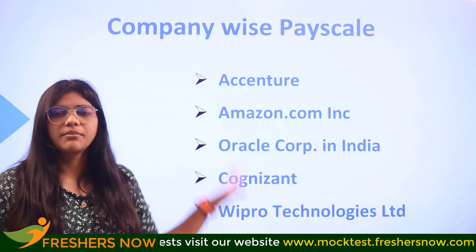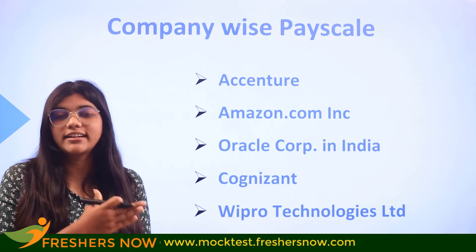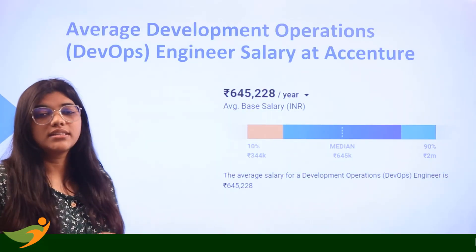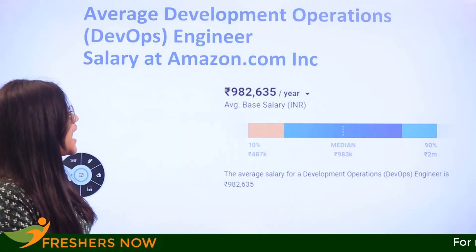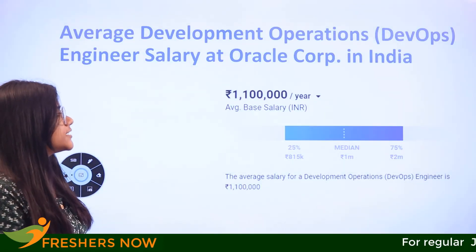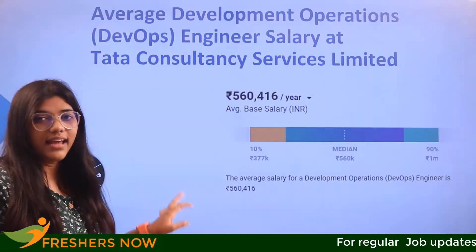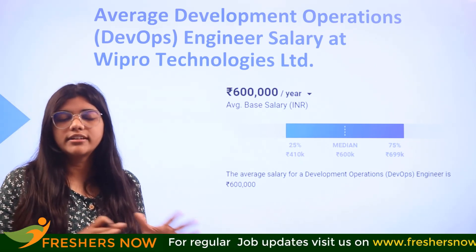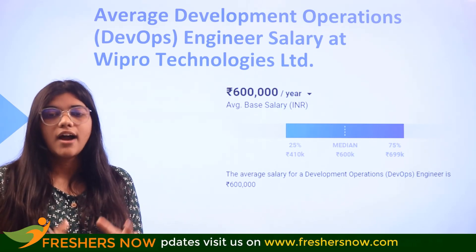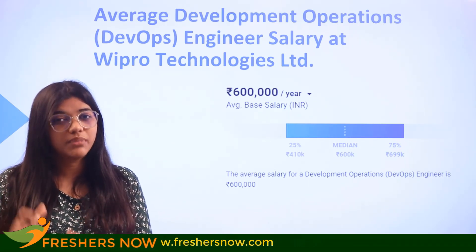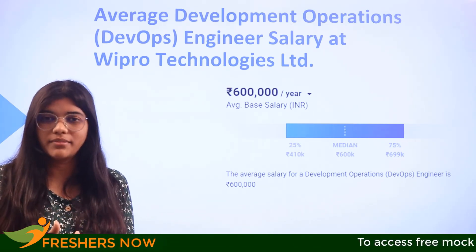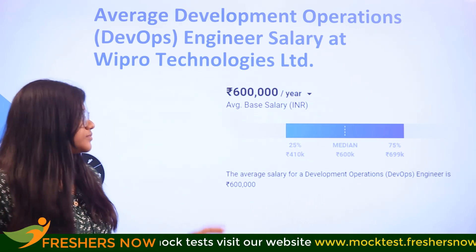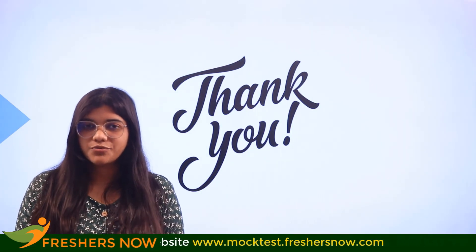You will also understand how major companies like Accenture, Amazon, Oracle, Cognizant, and Wipro are paying their DevOps engineers. Starting with Accenture: ₹6,45,000; Amazon: ₹9,82,000; Oracle: ₹11,00,000 per annum; TCS: ₹5,60,000; Cognizant: ₹8,25,000; and Wipro: ₹6,00,000 per annum. These figures will differ from company to company and by location, and are also impacted by your skills, experience, and certifications.